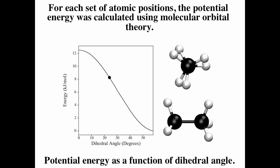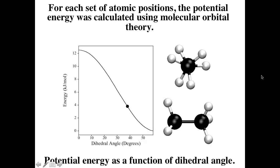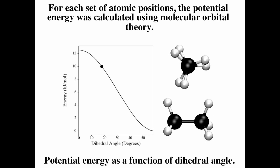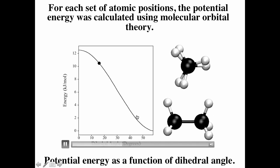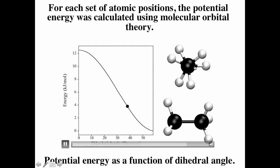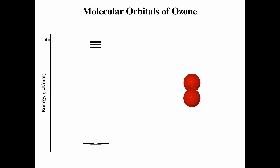This shows the energy as a function of torsion angle for ethane — looking down the axis of the bond and from the side. This was created by calculating energies for positions of the nuclei using molecular orbital theory. When the hydrogens are closer you have repulsion and higher energy, which is less stable. When the hydrogens are farthest away you get the lowest energy — that is the most stable configuration.